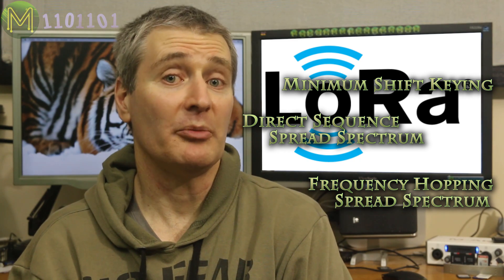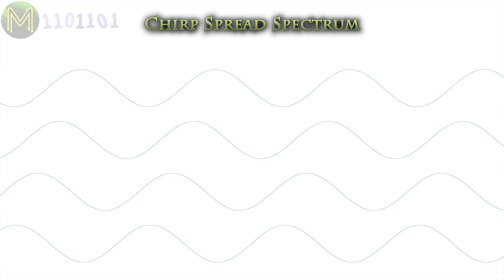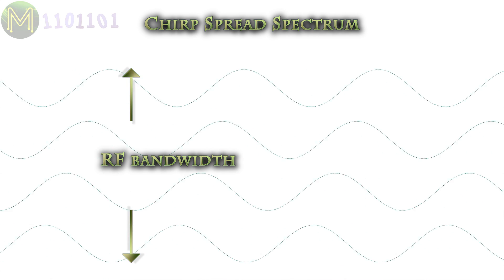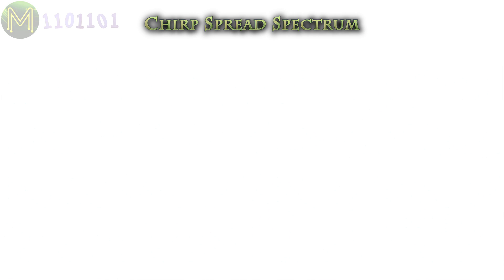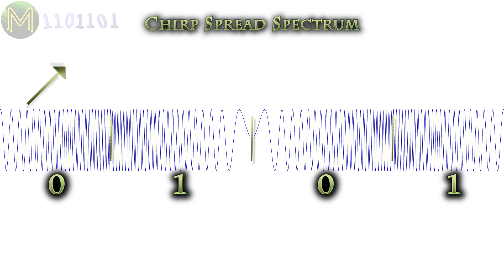But LoRa is a proprietary modulation technique that uses something similar to the FSK-based CSS, or chirp spread spectrum. Spread spectrum is a technique where multiple signals are transmitted within the same RF channel, which means that the entire bandwidth is used for transmitting data. The chirp part means the frequency modulation changes linearly over time, with either an upchirp indicating a binary 1 or a downchirp indicating a binary 0. This change in frequency is called the chirp rate.